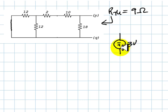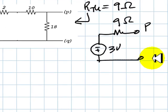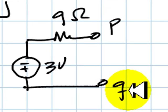So the equivalent circuit turns out to be negative 3 volts, that's why I draw it like that, upside down, a resistance of 9 ohms between nodes P and Q. And that is the solution to this exercise.